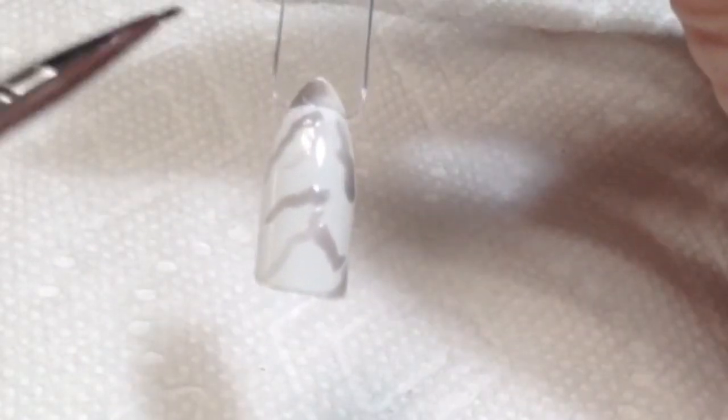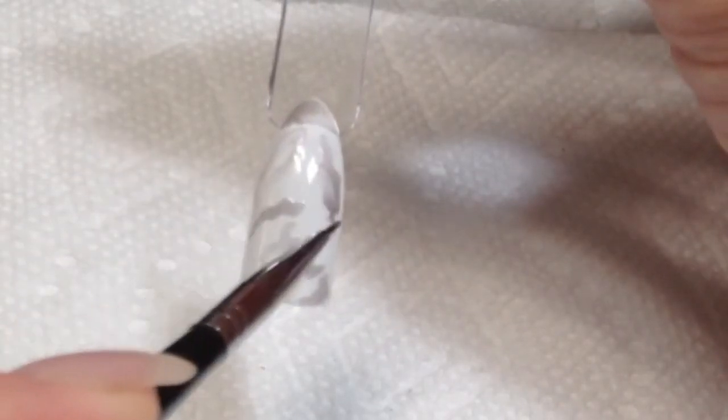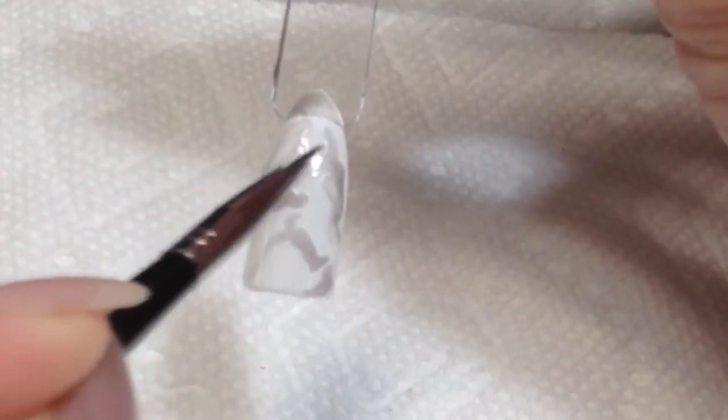Then you're going to dip your brush in acetone or polish remover and start wiping away the nail polish. This is going to create the base of the marble look.